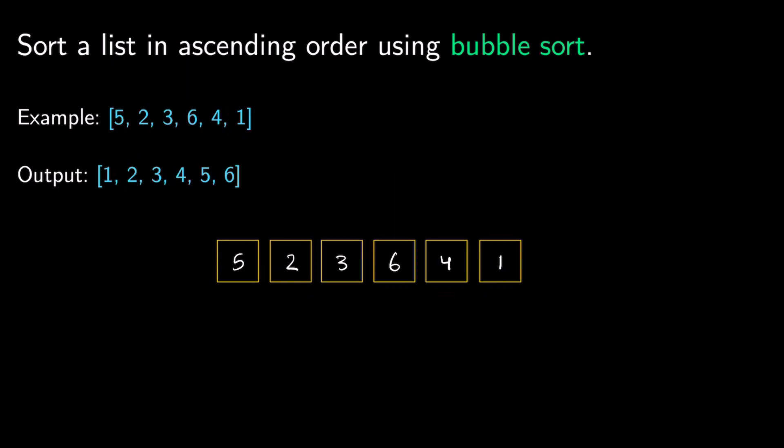So let's say we have a list: 5, 2, 3, 6, 4, 1 — or you can take any list — and let's say we want to sort it. Our output is going to be 1, 2, 3, 4, 5, 6. So let's see how we got that.